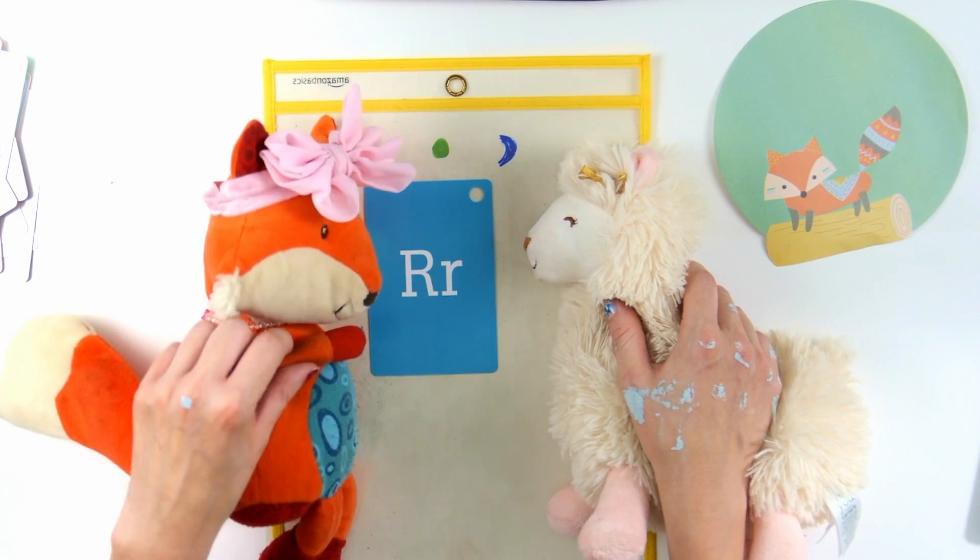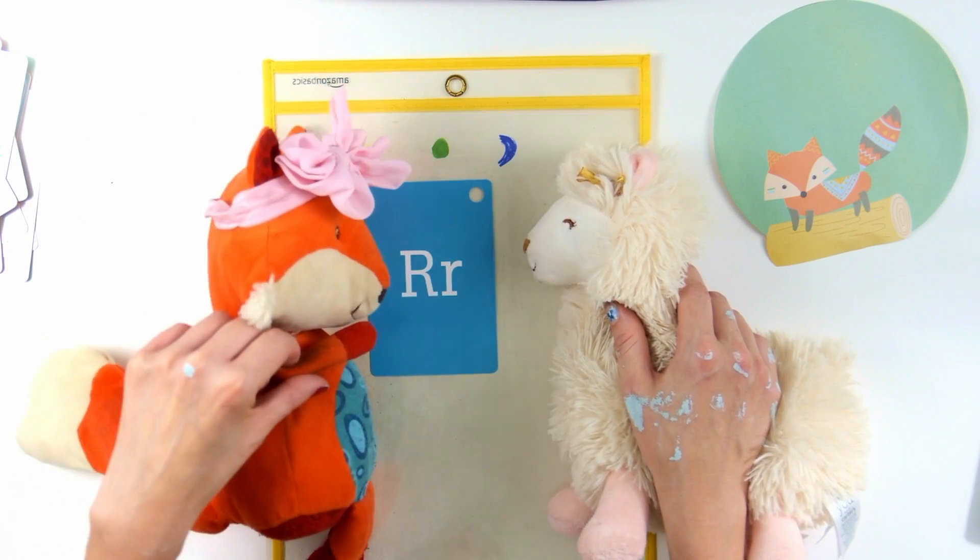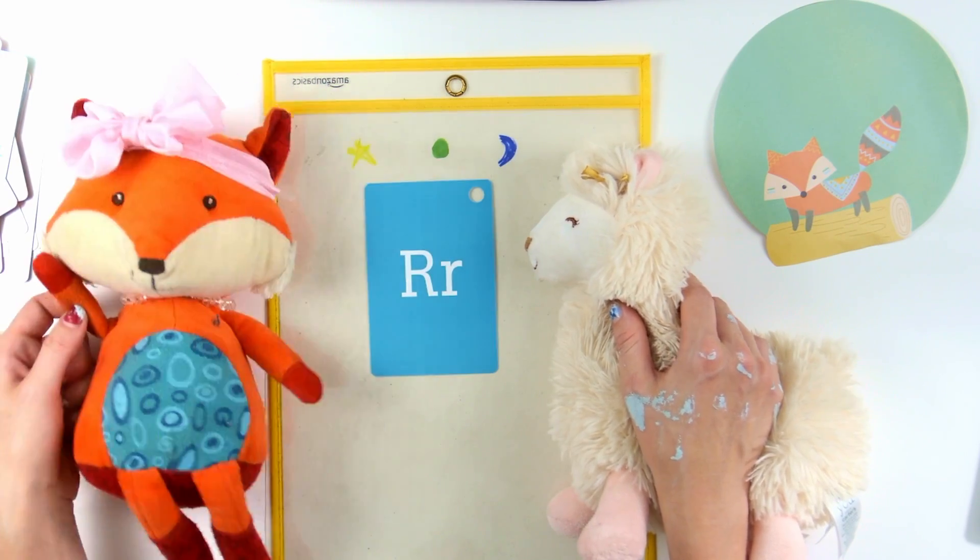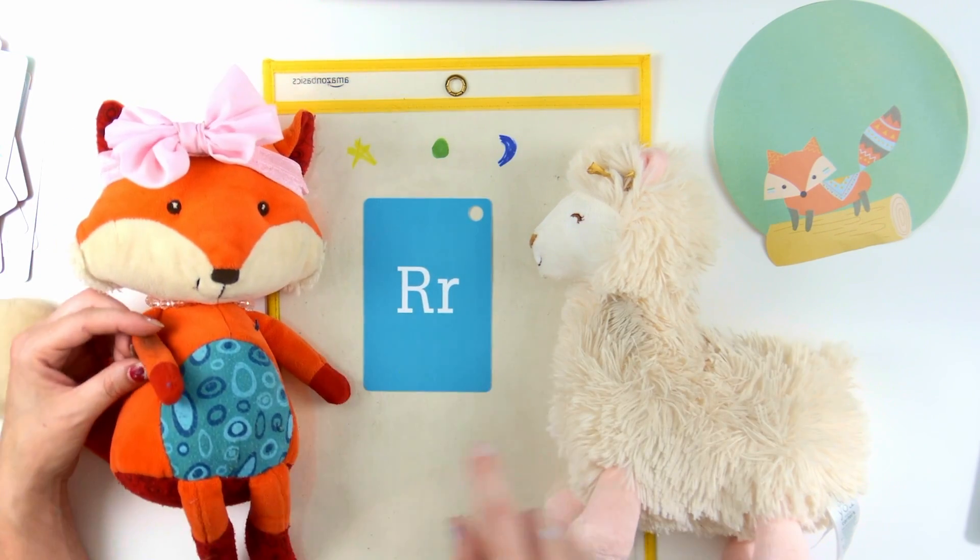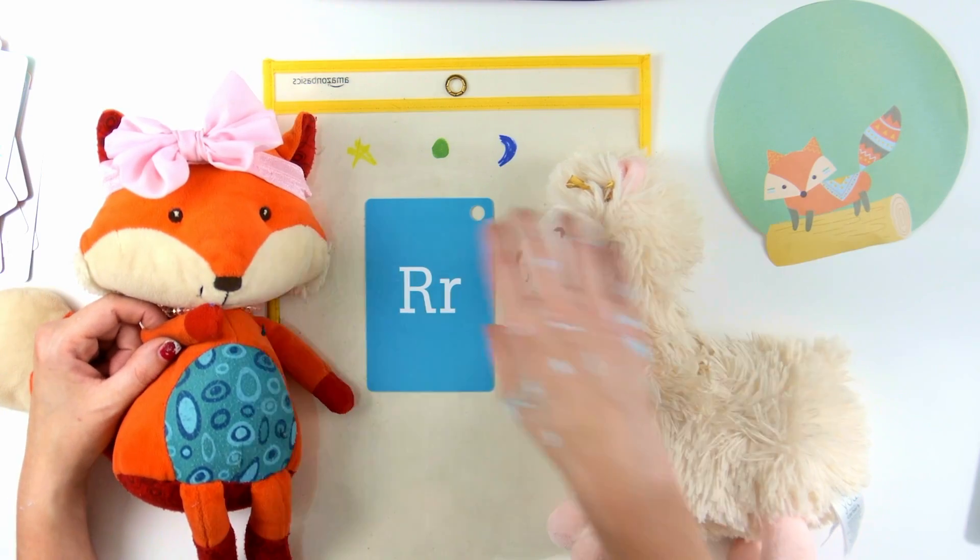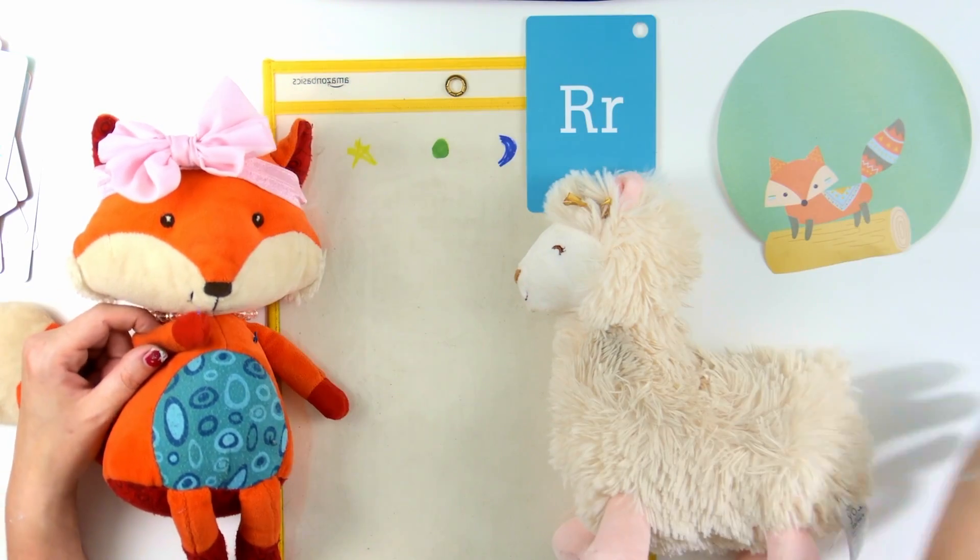I didn't! I thought it was something else. But now that I look at it, it's my letter, Roxy! R is for Roxy Foxy! That's right. Can we make our letter R now? We can make our letter R. Alright.